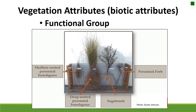Here's a picture of some functional groups commonly used in range. You can see deep-rooted perennial bunch grasses — this is a bluebunch plant, and you can see the roots. It acts differently than the shallow-rooted perennial bunch grass next to it, which is Poa secunda. They have different profiles in the soil and access different nutrients, so they behave differently under disturbances or management. Sagebrush is a taproot species that can access water and resources much deeper in the soil profile.